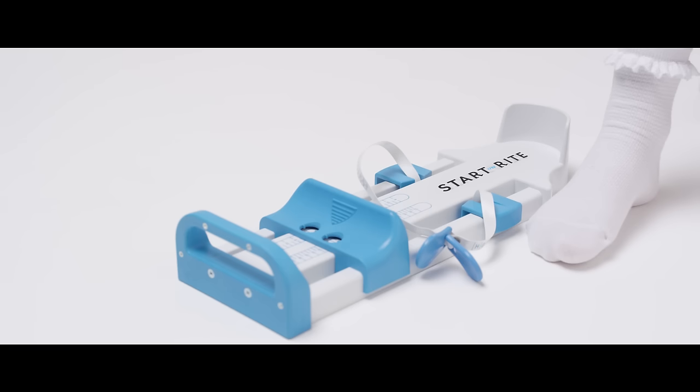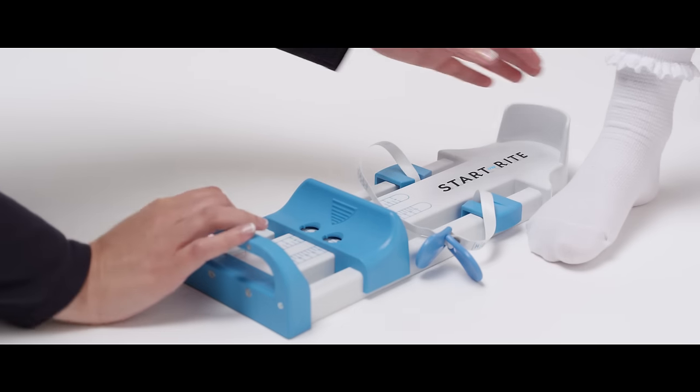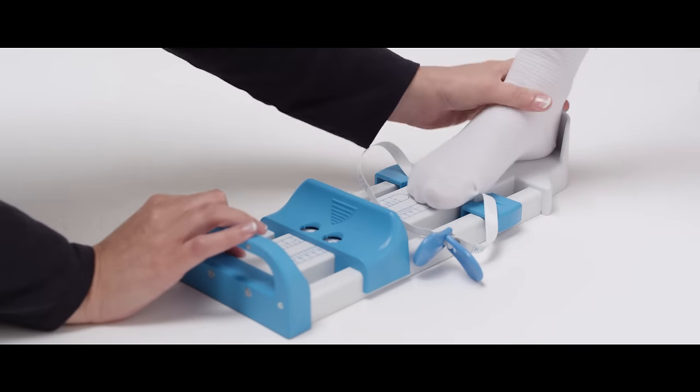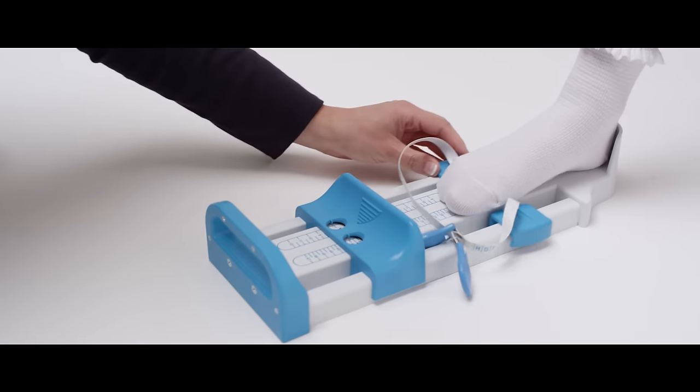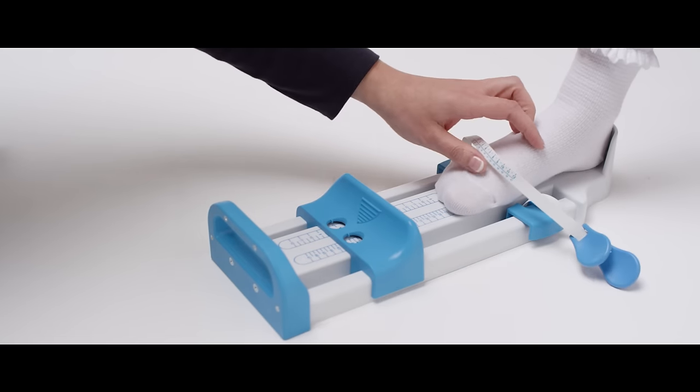Place the gauge on a hard floor with your child sitting. Guide one foot into the gauge so that their heel sits against the heel rest and the tape is around their foot. The measurement won't be accurate if your child is standing.